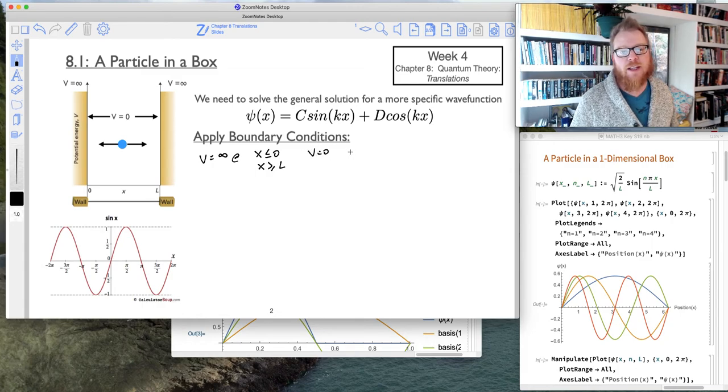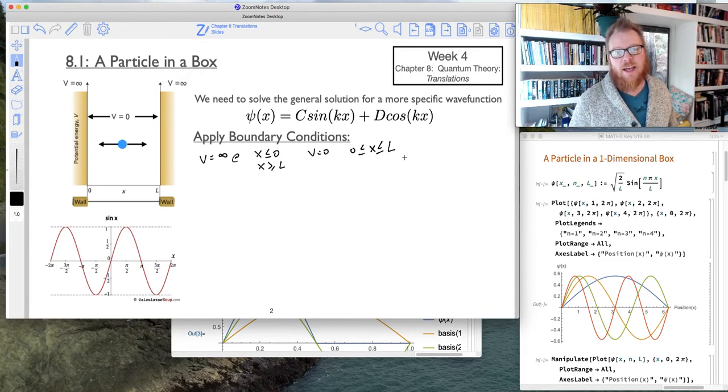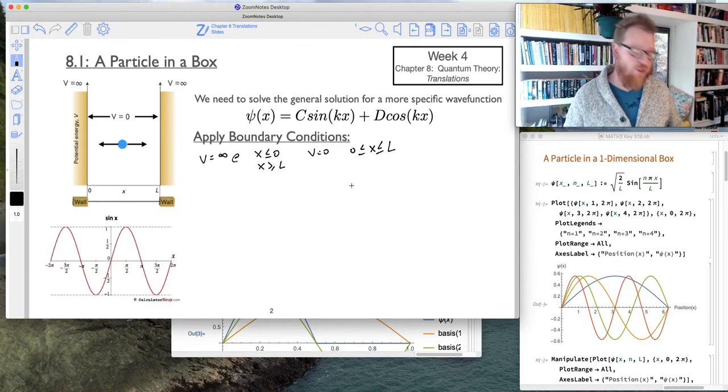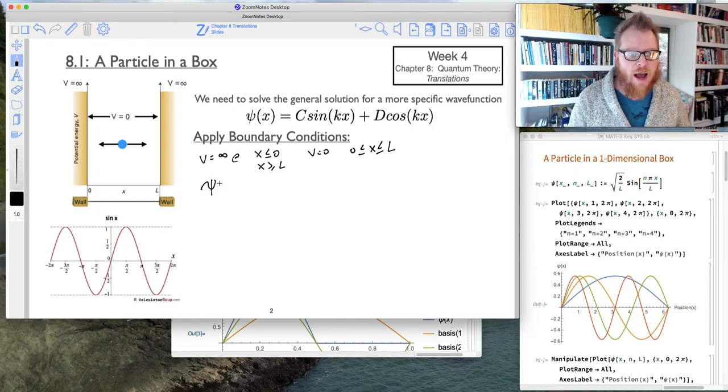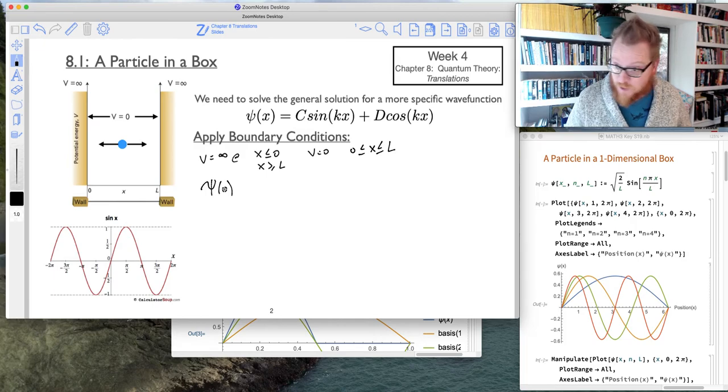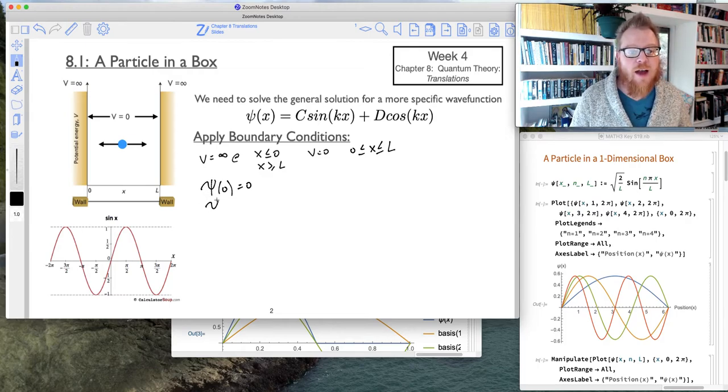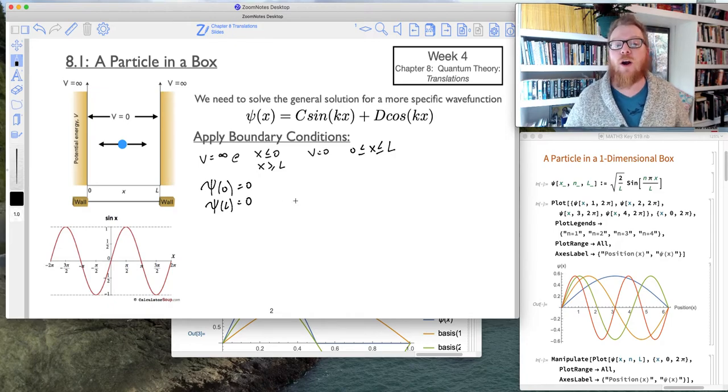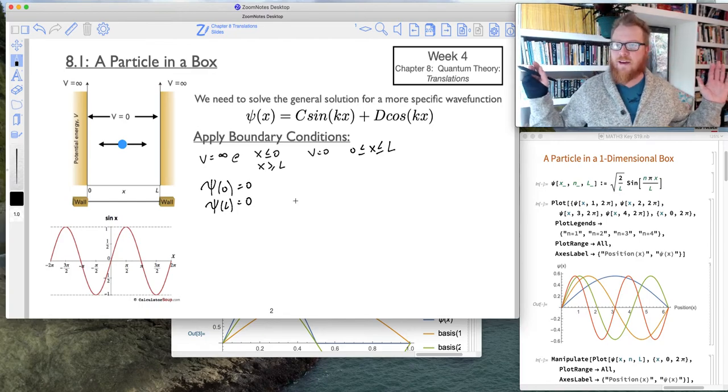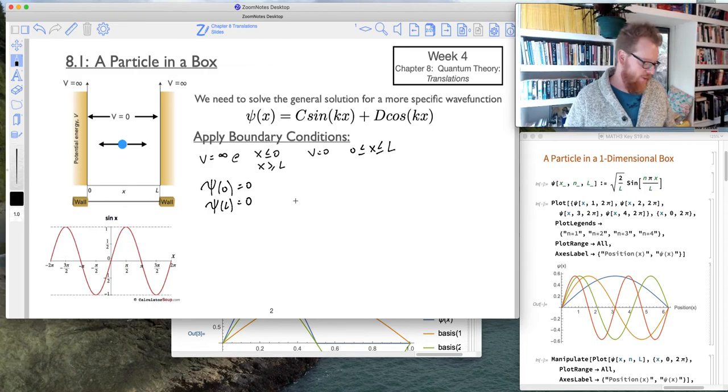But we know that the potential is 0 for x between 0 and L. So potential energy equals 0 for when x is between 0 and L. So what this also means is the value of psi when x equals 0 must be 0. Similarly, the value for psi at x equals L also must be 0. So that's part of confining this particle to this box. We're saying the wave function, in other words the particle, can't exist outside of the box.